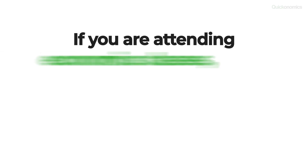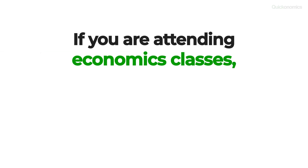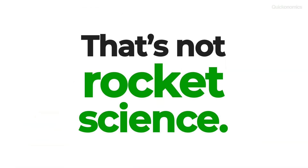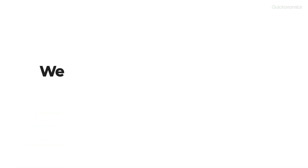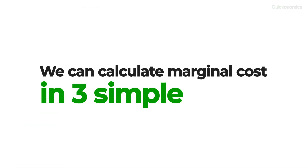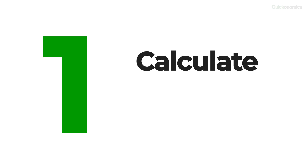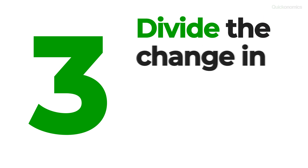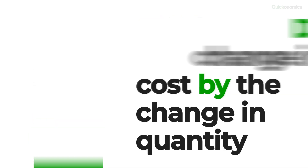If you're attending any economics classes, you'll most likely have to calculate marginal cost at some point. Luckily, that's not rocket science. We can calculate marginal cost in three simple steps. First, we calculate the change in cost. Second, we calculate the change in quantity. And third, we divide the change in cost by the change in quantity.